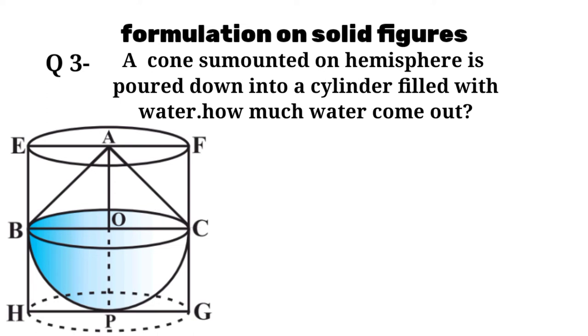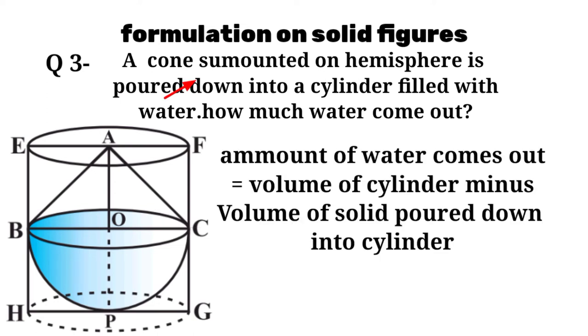A cone surmounted on a hemisphere is poured down in a cylinder completely filled with water. How much water comes out? Answer is: Volume of water comes out equals volume of cylinder minus volume of solid poured down in cylinder.